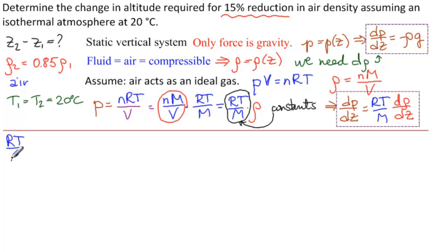So we have RT over M d rho dz equals minus rho g. And it just makes it easier if dz goes on that side. So, organizing properly, we would have minus RT over Mg. We check that none of these are dependent on Z. And we can actually find all of them, the molar mass of air we can find, and RT and G we know.